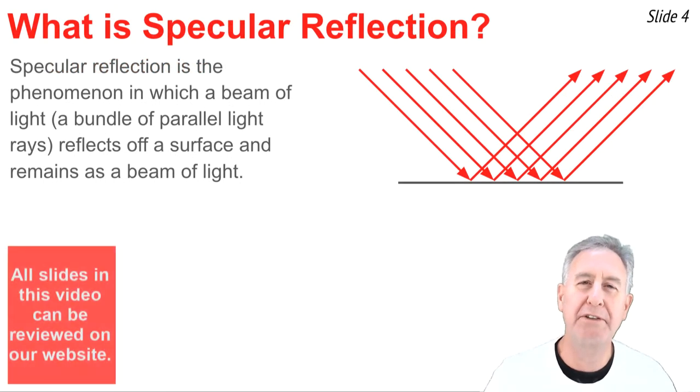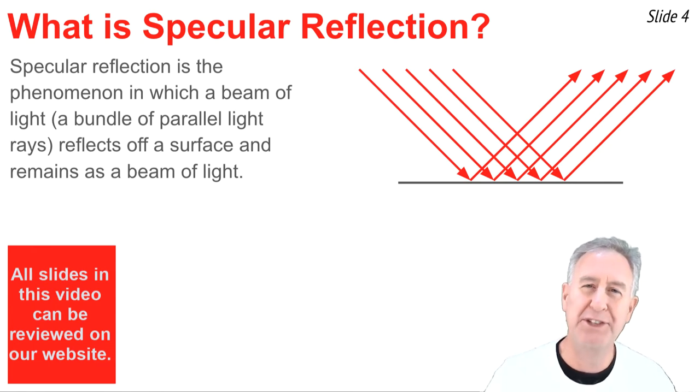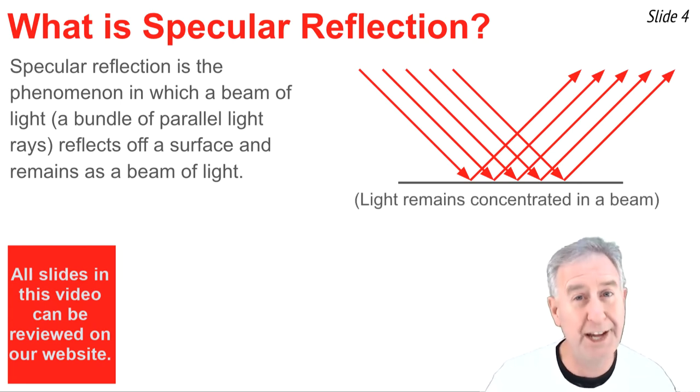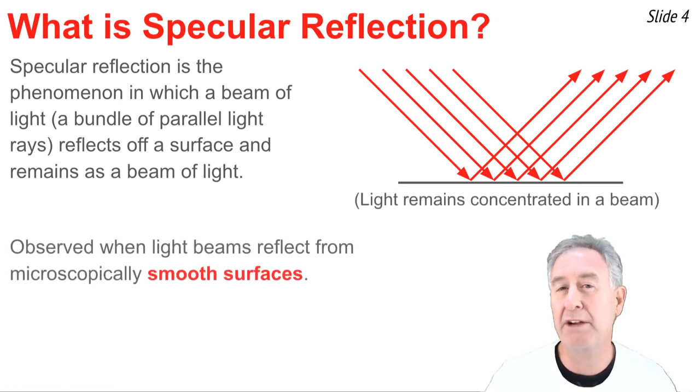So what is specular reflection? It's the phenomenon that takes place whenever a beam of light strikes a surface and reflects and remains as a beam of light. You'll notice in the diagram above that a beam of light can be thought of as a collection of light rays traveling parallel to one another and concentrated into a narrow beam. You'll also note in the diagram for specular reflection that each of these light rays reflects and still remains concentrated in a narrow beam. This occurs whenever you shine a beam of light on a microscopically smooth surface.